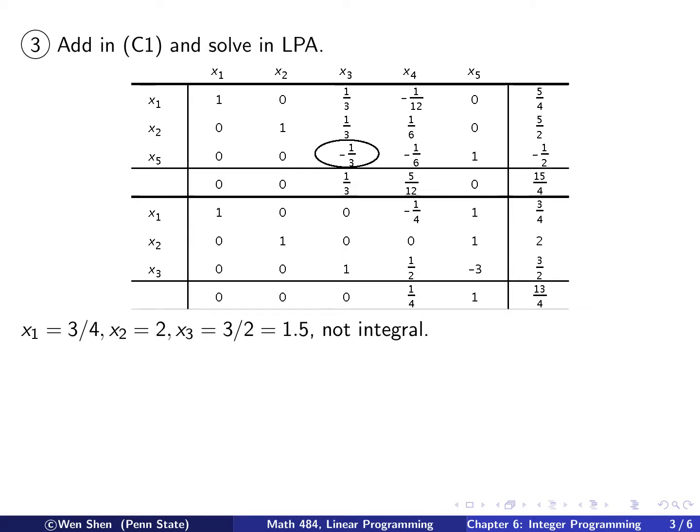And then here we are going to solve this with the dual simplex algorithm. So pick this row here, and then between these two, it's this column. So I pivot here, and then I get this part, and then I have all positive, so optimal is reached. So I see that x1 is 3 quarter, x2 is 2, x3 is 3 over 2. So it's still not an integral one, so we need to do one more time.